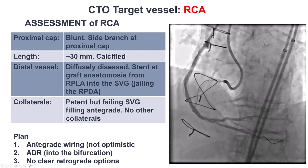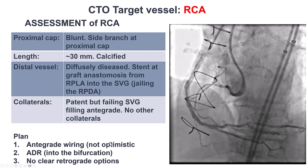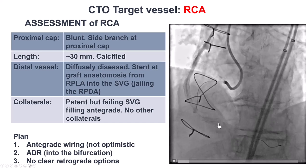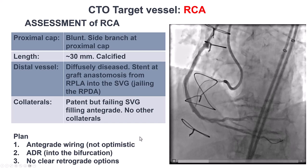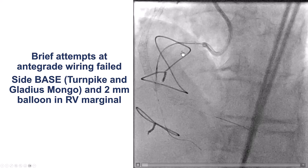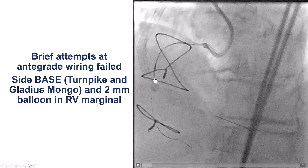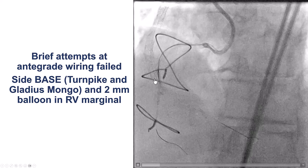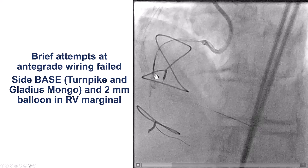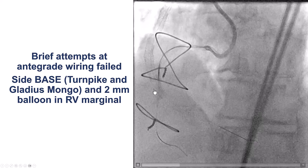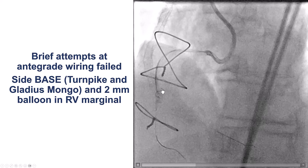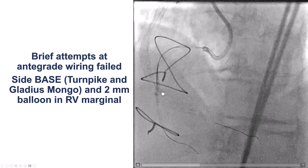Our plan here was to go antegrade with wiring or ADR, going before the bifurcation for the reentry, as retrograde was unlikely to work. We did several attempts for wiring antegrade, but that did not work. We then placed a balloon in the marginal branch at the proximal cap, and after doing that, we were able to knuckle.